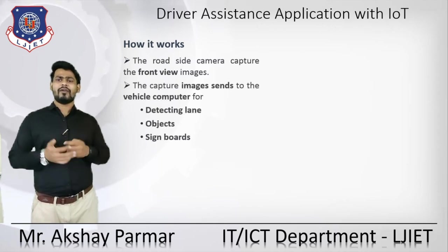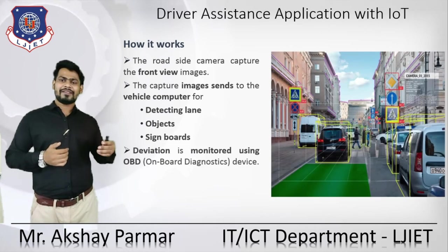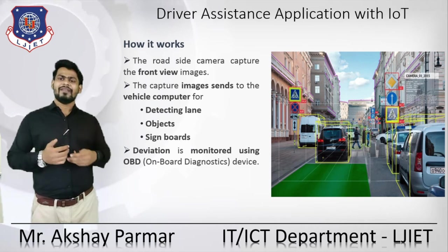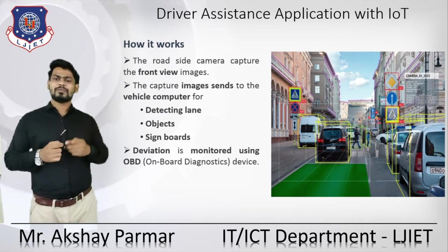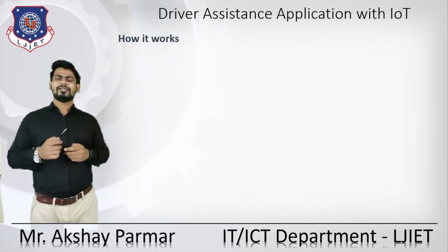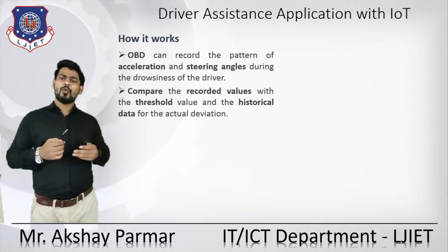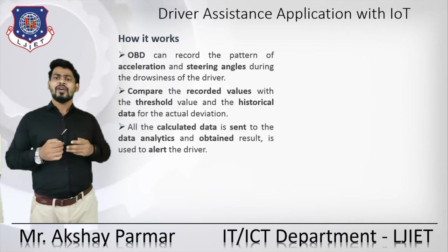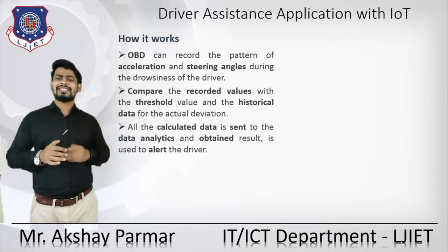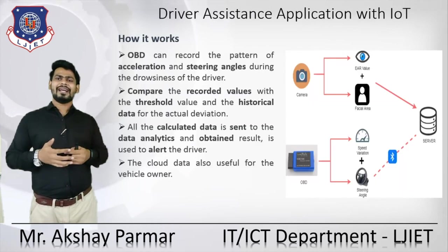The road-side camera captures the front view image. The captured image is sent to the vehicle computer for detecting the lane, detecting objects coming toward the vehicle, and sensing sign boards. Deviation is monitored using the OBD — the onboard diagnostics device. The OBD records the pattern of acceleration and steering angle during drowsiness. The recorded values are compared with threshold values and historical data for actual deviation detection.